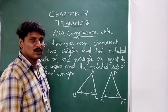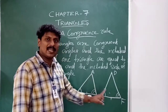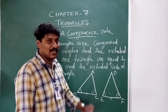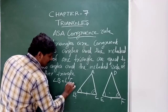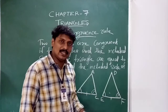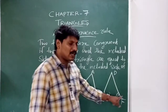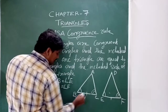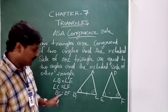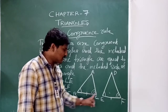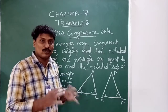Let's say two triangles: if 2 angles and 1 side are equal — angle B is equal to angle E, angle C is equal to angle F, and BC is equal to EF — then the two angles are equal, the two sides are equal, and the two triangles are congruent.